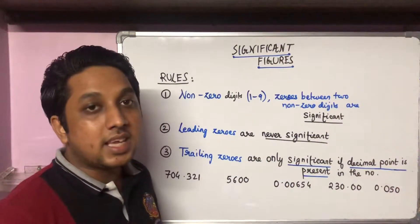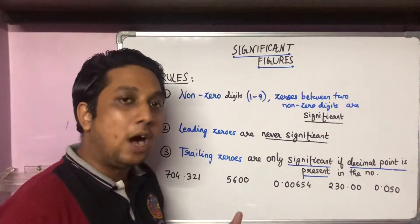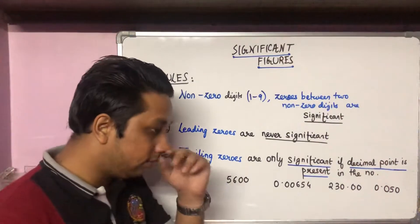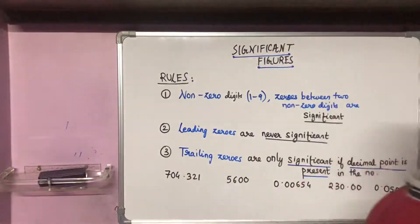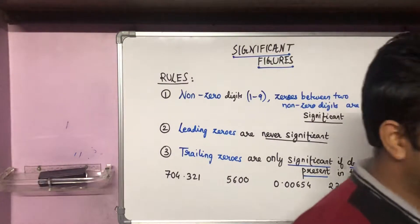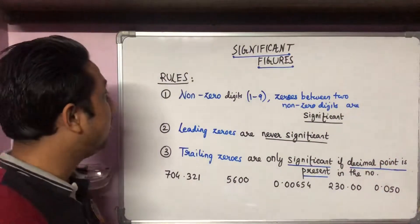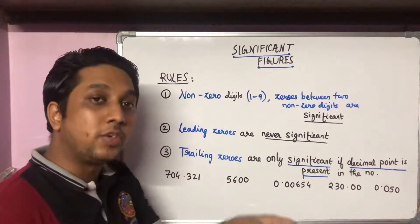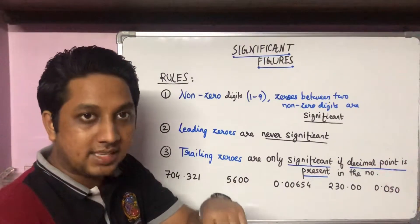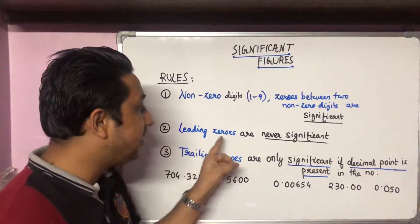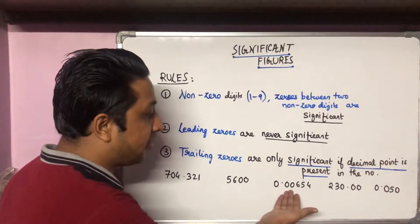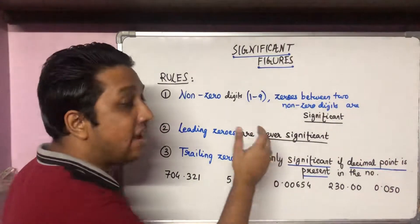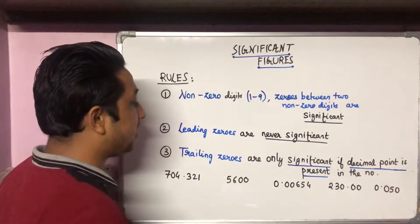In a single shot, how to count the number of significant figures in a particular number. The first rule: nonzero digits one to nine, and those zeros which are lying between any two nonzero digits, will be regarded as significant. Number two: leading zeros — the zeros at the start of a number — are never significant. Leading zeros are never considered to be significant.